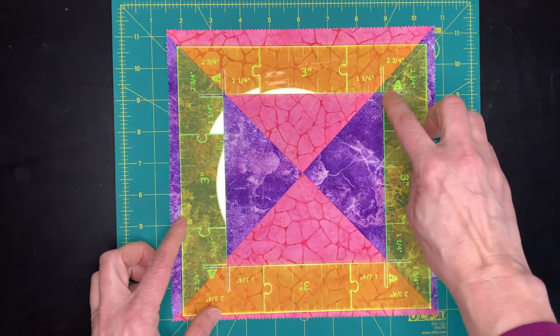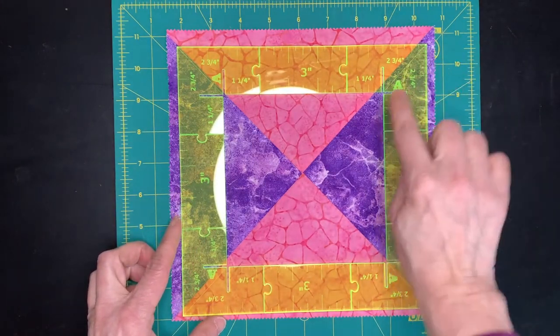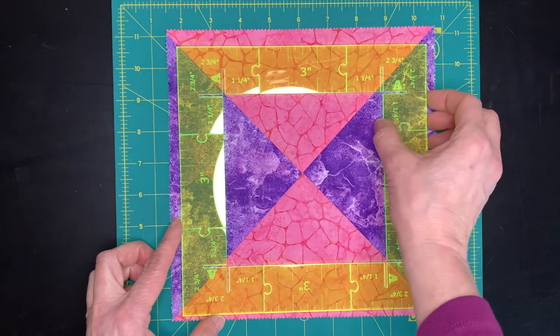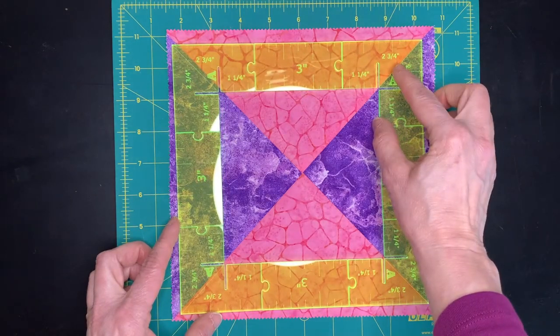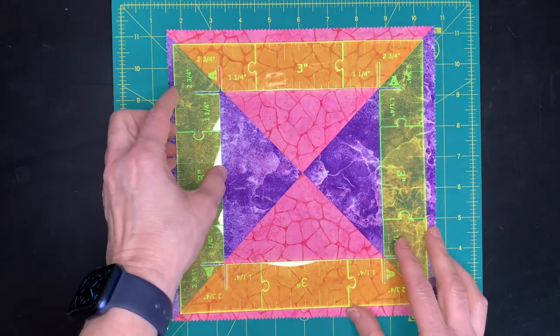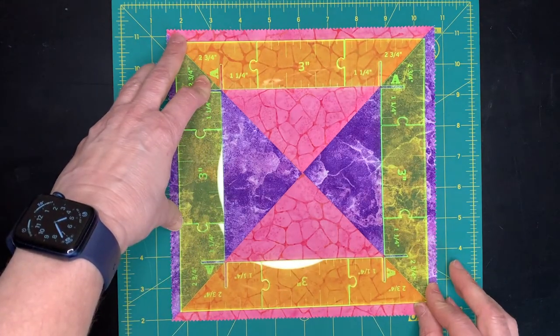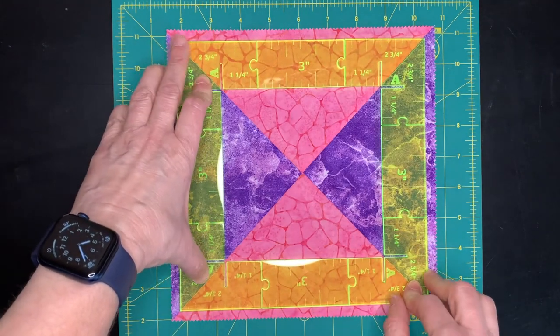Now, the beauty of these lines in the corner is, see this diagonal line? I line that up with the diagonal of my block, line up this with the diagonal. When I have all four diagonals lined up.